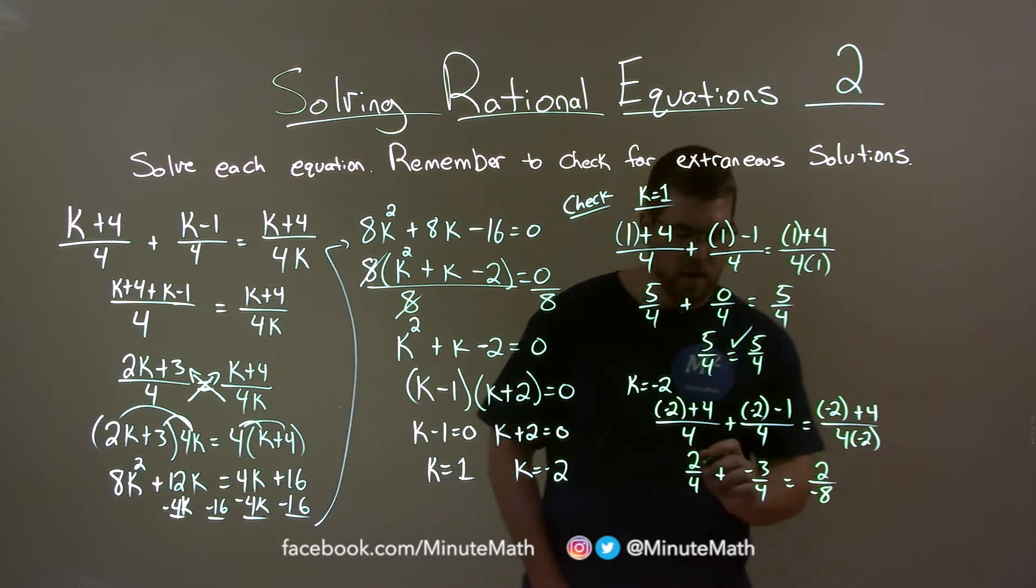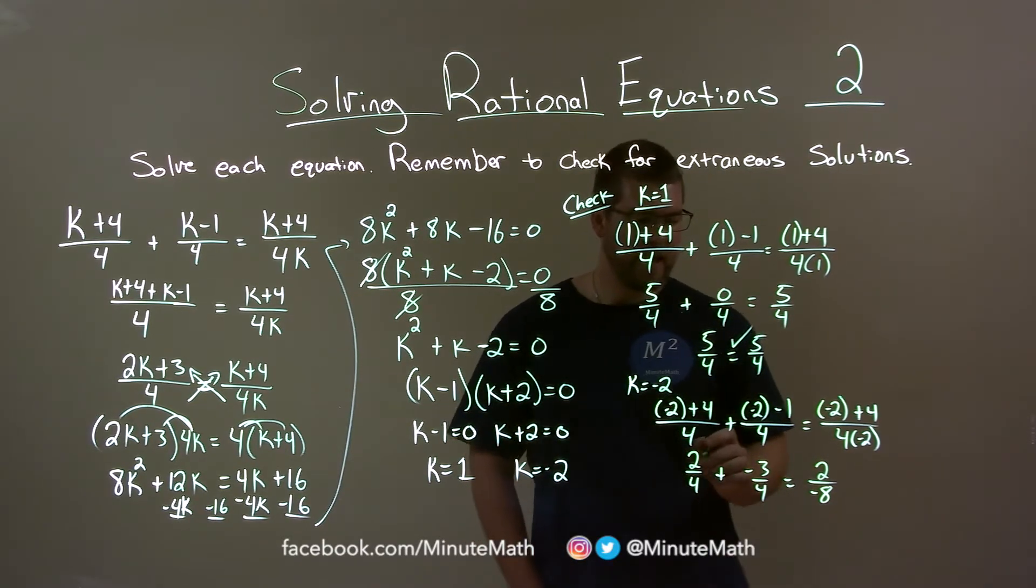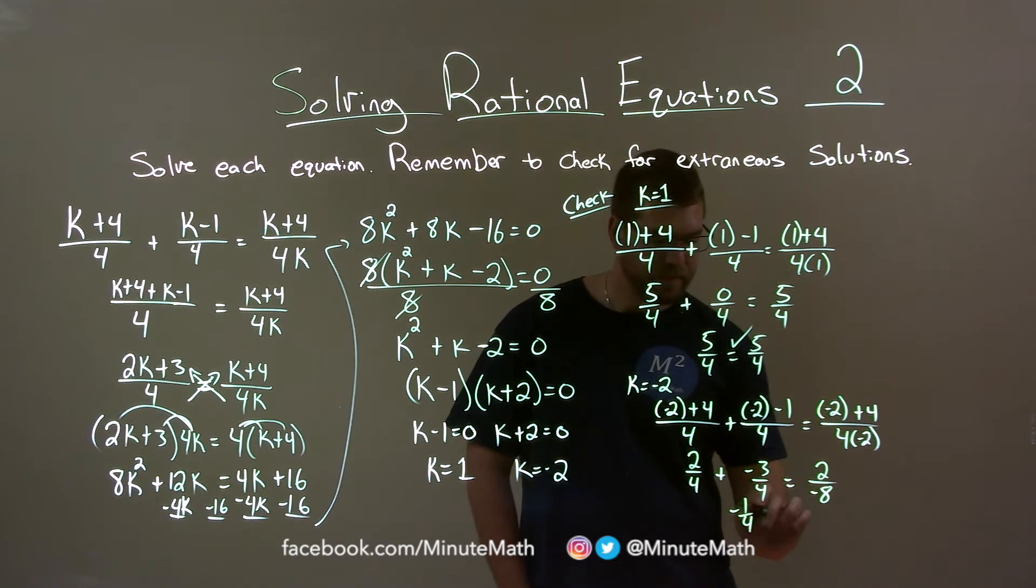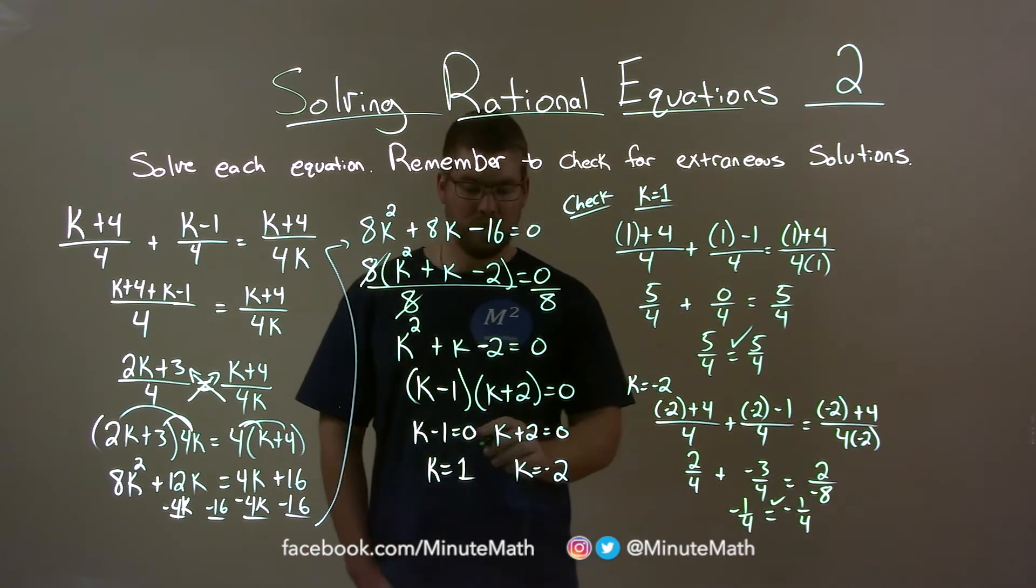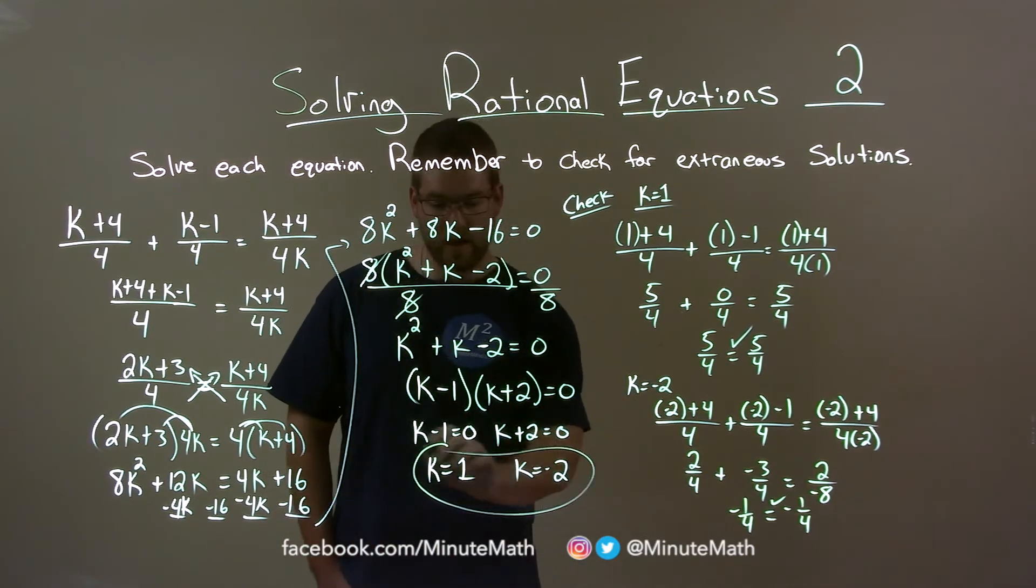Well, 2 fourths plus a negative 3 fourths, that's a negative 1 fourth. And then 2 over negative 8 simplifies to being negative 1 fourth. Again, left and right hand side are equal, showing, confirming that negative 2 is a solution. So our final answer are both values, k equals 1 and k equals negative 2.